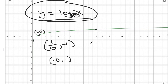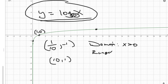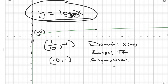The domain is going to be all numbers greater than zero. The range is all real numbers. And we have an asymptote — remember, that's the barrier the graph cannot cross. This one is the y-axis, or x equals zero.